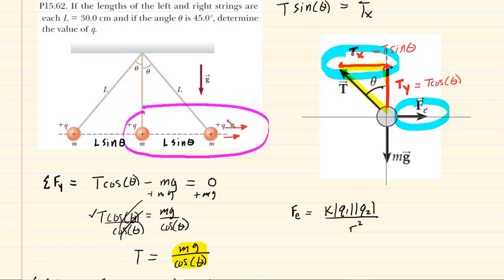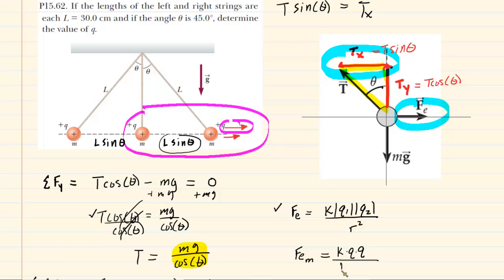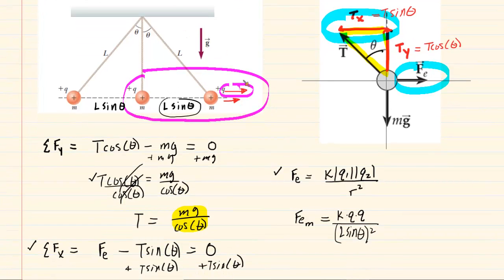Let's consider the force from the middle charge on the rightmost charge, calling it Fm. Using Coulomb's law: Fm equals K times Q times Q — since both charges are Q — divided by the distance between them squared. That distance is L sine theta, so the denominator is (L sine theta) squared. This is the electrostatic force exerted by the middle charge on the rightmost charge.